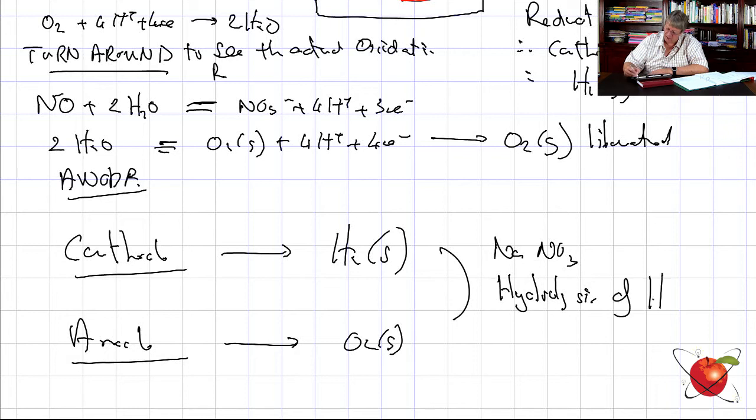Just quickly: what if we'd had zinc nitrate Zn(NO3)2? Looking at the table, zinc is just below the hydrogen line, so zinc would come out — we would not get hydrogen gas. But if it were magnesium or chromium, which are above hydrogen, you'd get hydrogen given off. That's how you interpret the table.